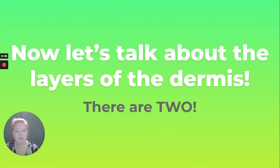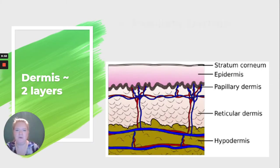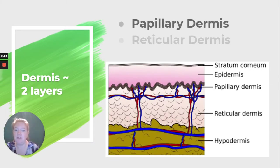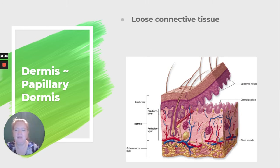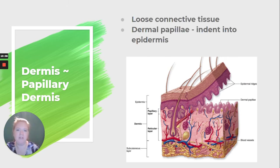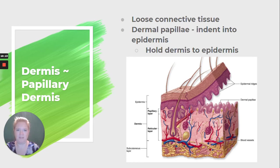Now let's talk about the layers of the dermis — there are only two, versus the five in the epidermis. We have the papillary dermis and the reticular dermis. The papillary dermis is loose connective tissue. It has dermal papillae, which indent into the epidermis.